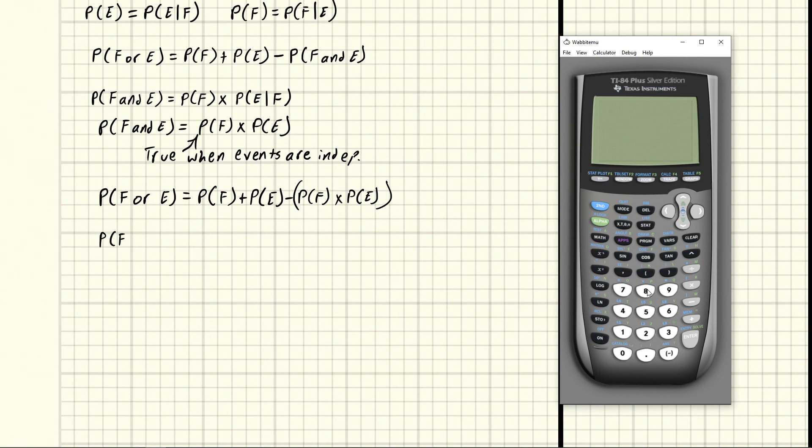So the probability of F or E is equal to 0.32 plus 0.12 minus 0.32 times 0.12. Let's see what we get here.